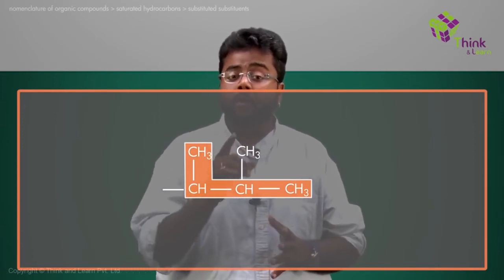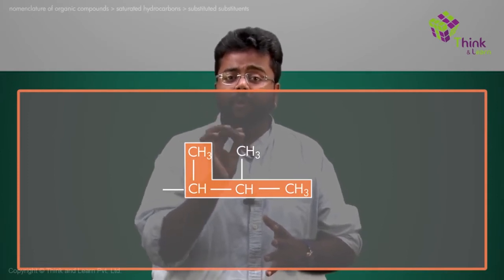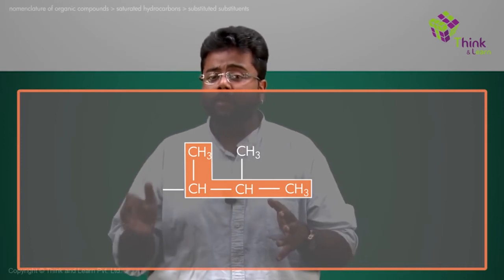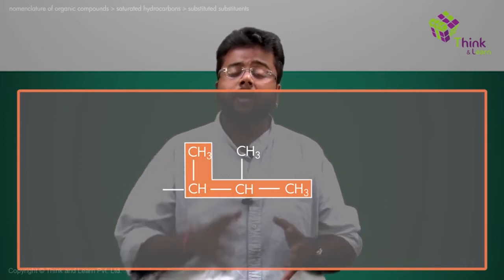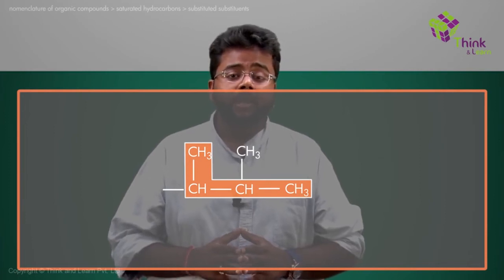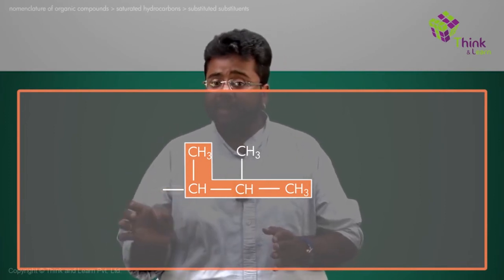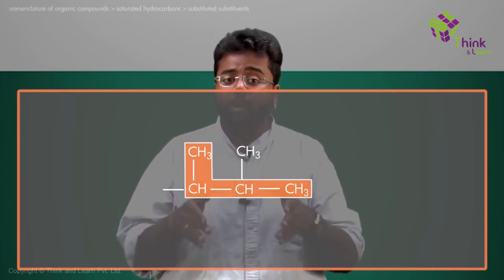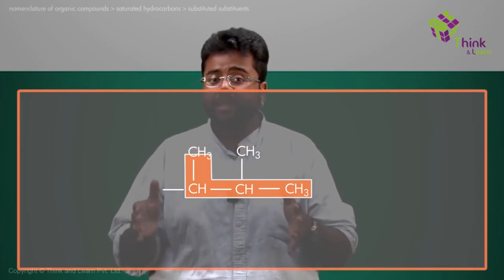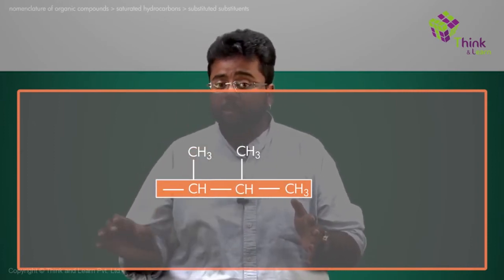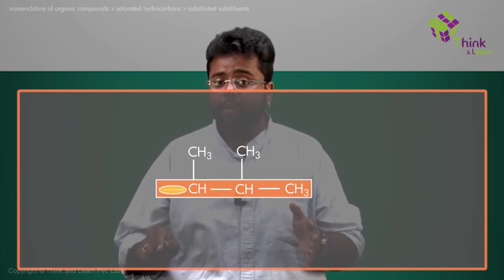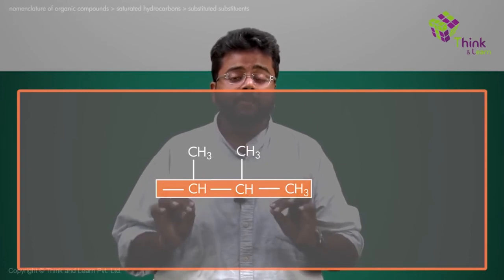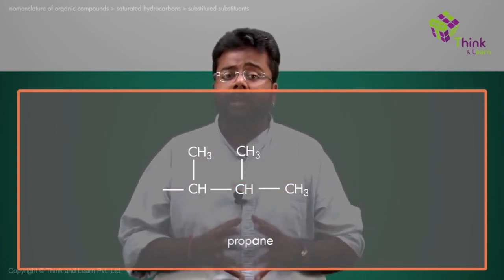But is that right? No. Over here, you have to remember that the position at which the substituent is connected to the parent chain has to be included while taking the parent chain. So if I take the four-carbon chain, I am neglecting the point at which it is connected to the parent chain. So my parent chain over here can only have these three carbons. That means three carbons is my parent chain, so the name is propane. And on the first and the second position, I have methyl.